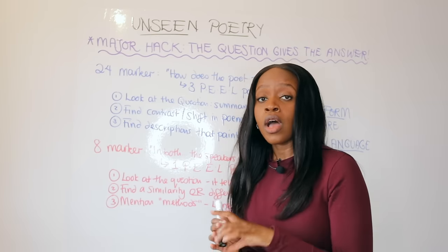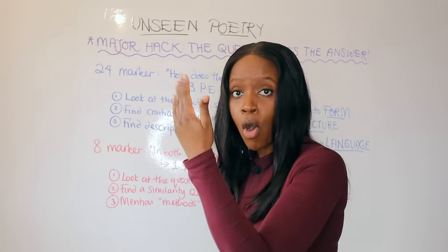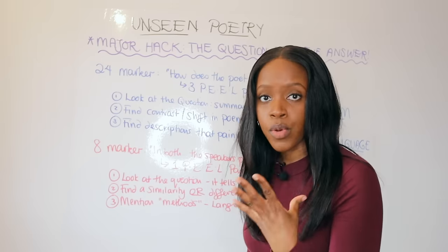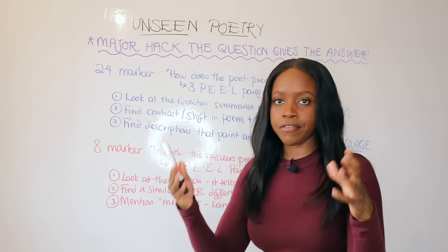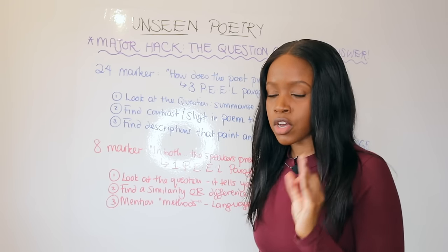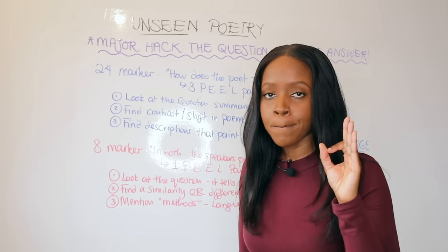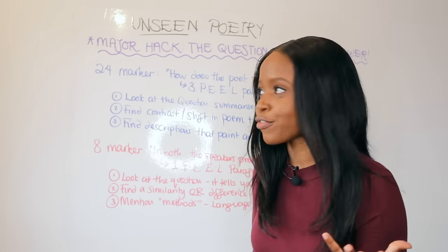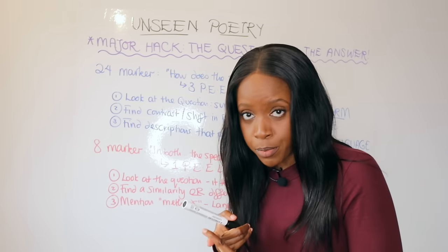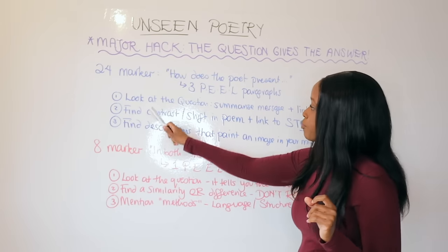The 24 marker in section C part one is actually quite easy to do really well in. To get as close to 22 to 24 marks, write three separate PEEL paragraphs — that's Point, Evidence, Explanation, Link. Make sure each point is very distinct from the others. Also include your subject terminology: language, form, and structure.